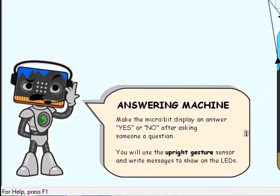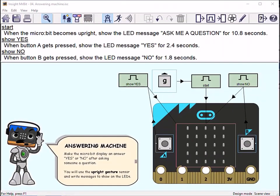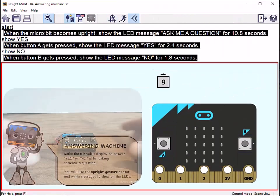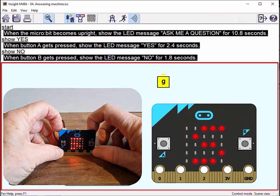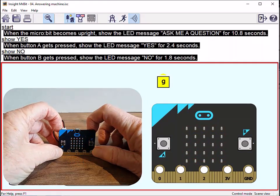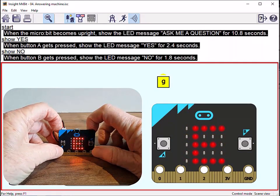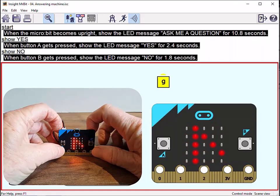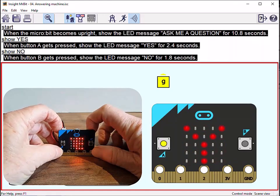This program sends messages to the microbit screen. The first message appears when the microbit is placed upright. Then, pressing the buttons, there are different messages for each one.